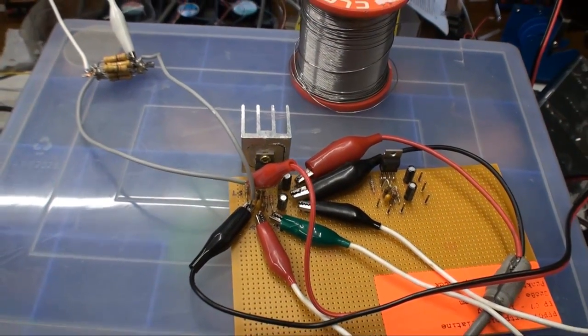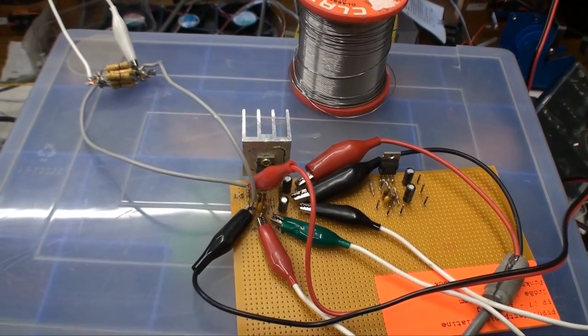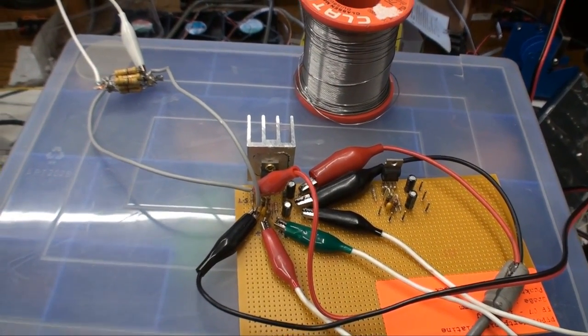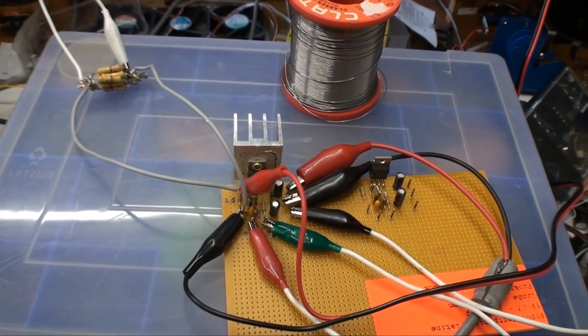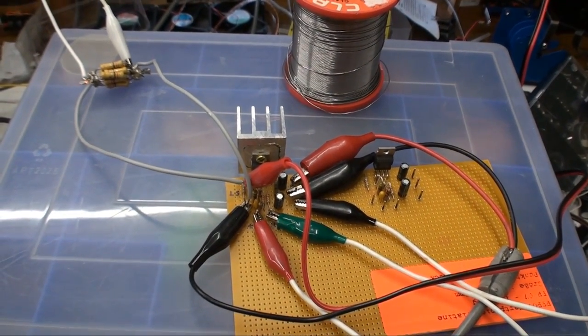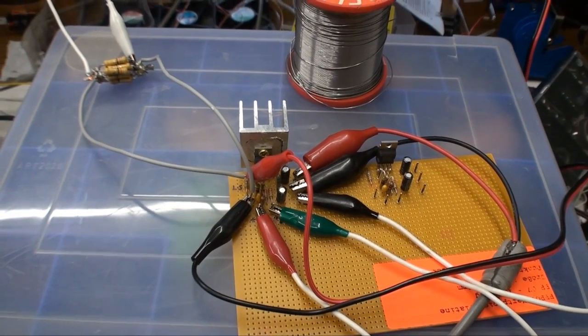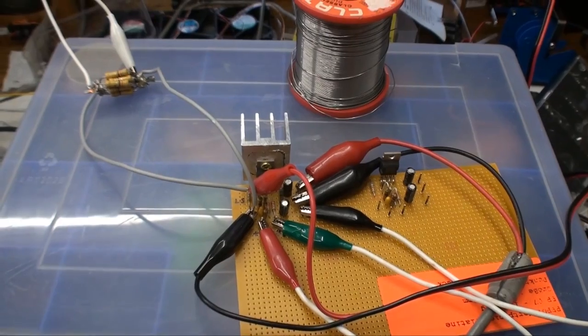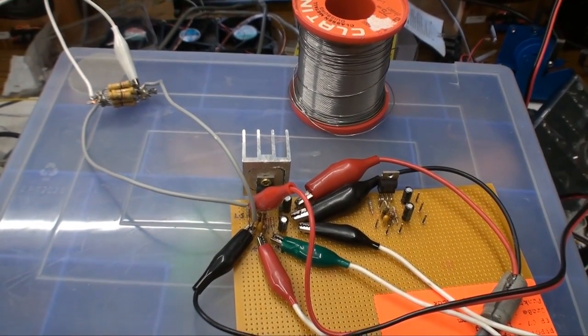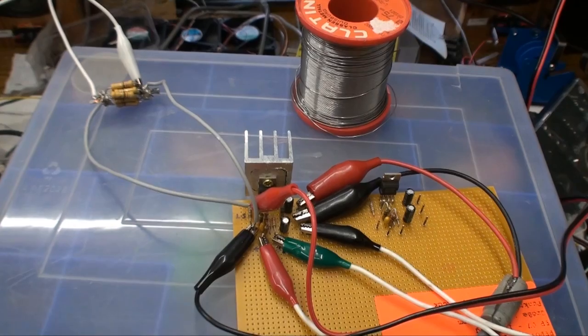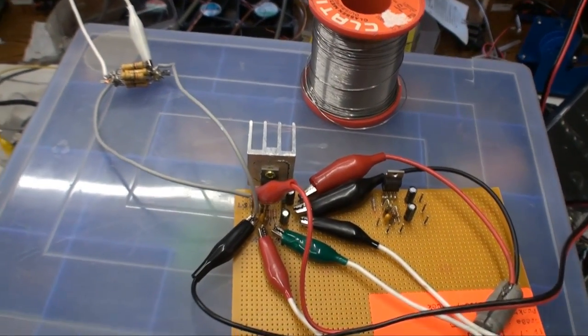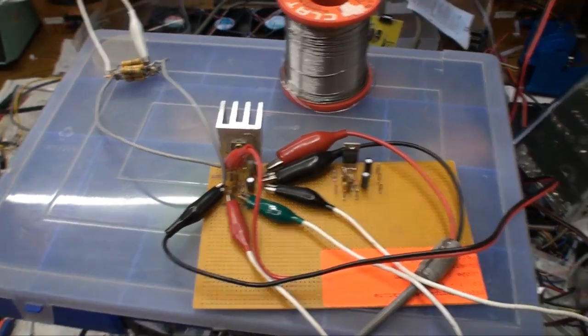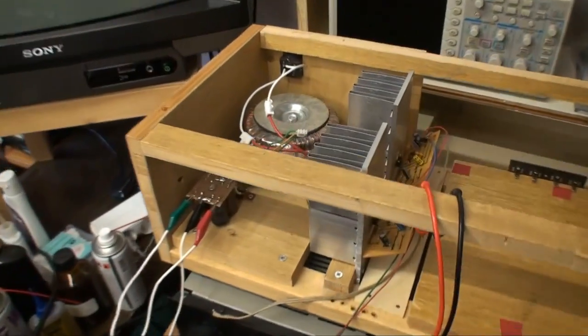As you can see this is all connected up, and what we're going to do is we're going to take a look at the output power of this thing. We're going to take some measurements and see how it all works, and then we're going to take a look at the datasheet and see if what we have right here matches up with a theory that's all written up in there. So, how does it all work?